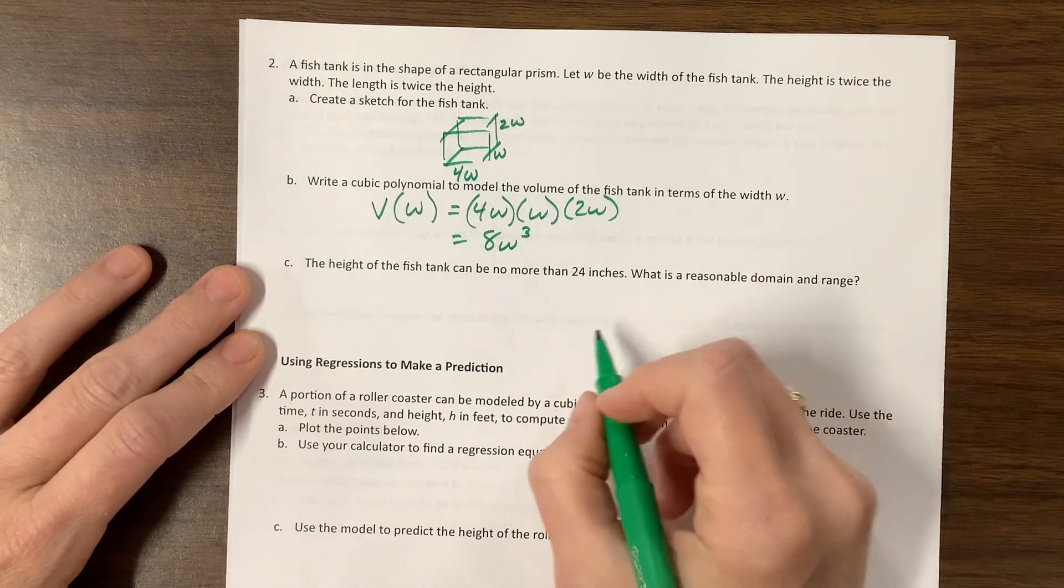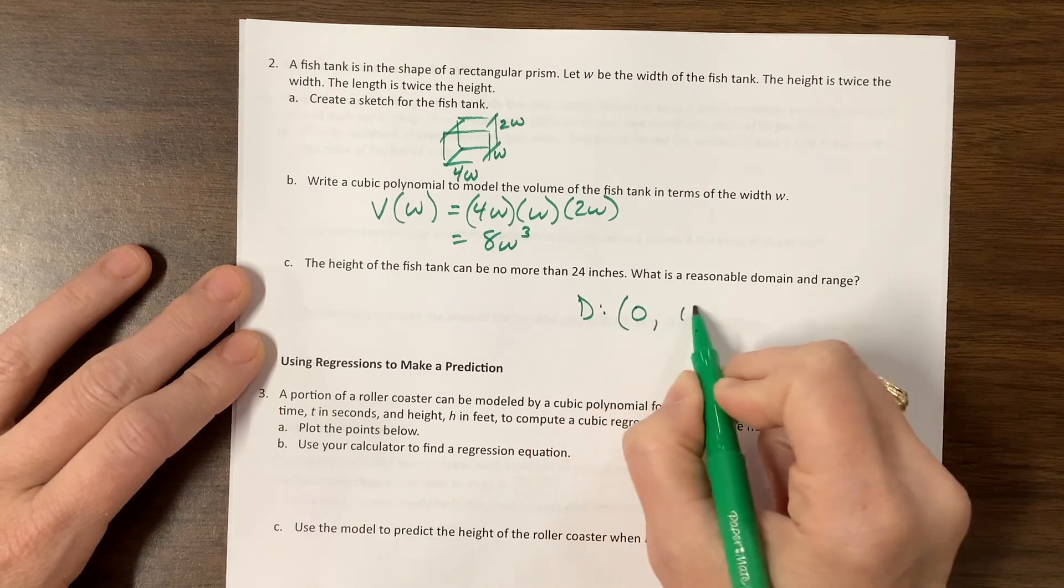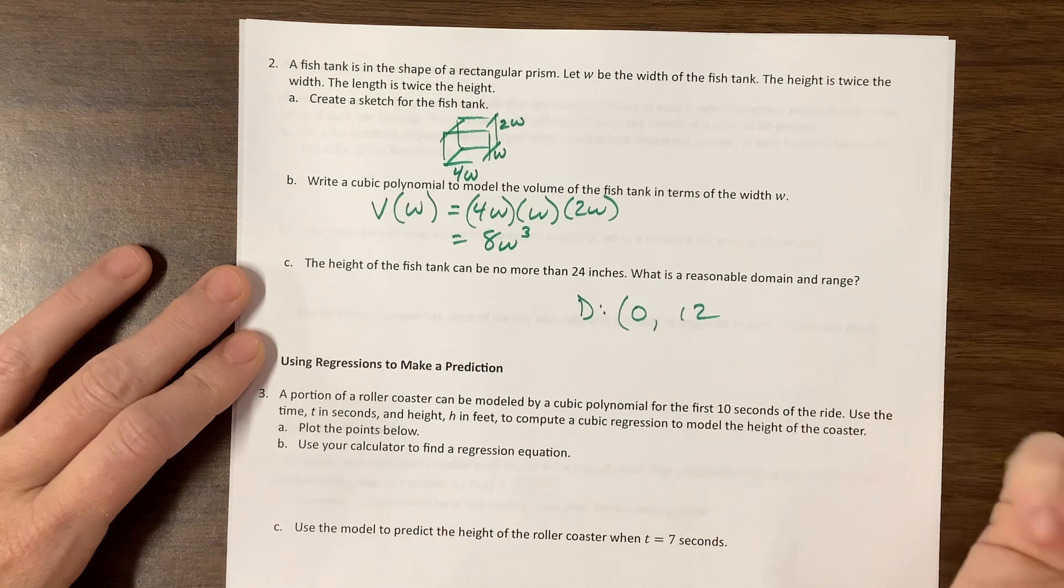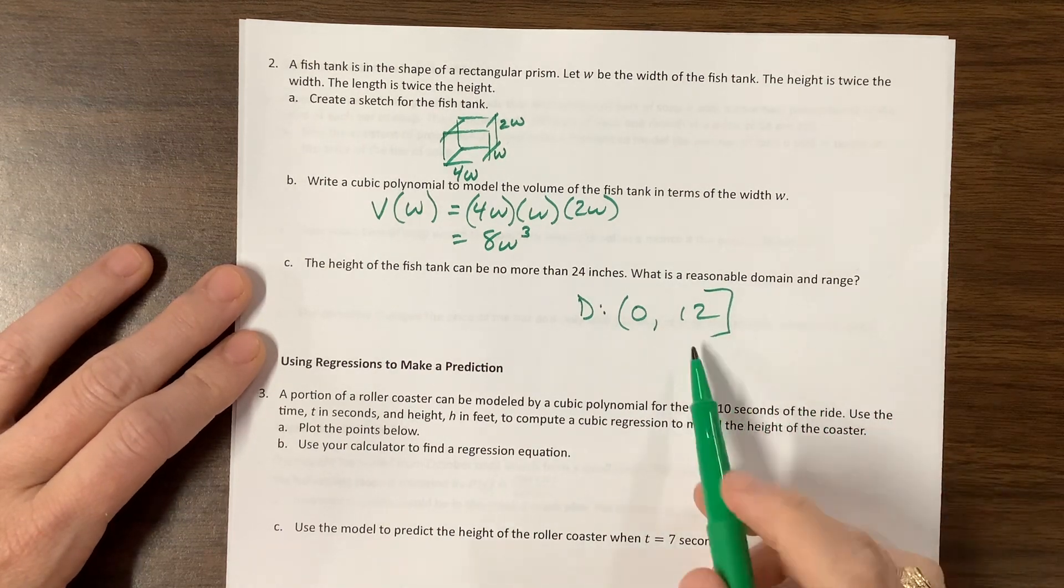So what's a reasonable domain? A domain could go somewhere from 0 to 12 for the W value. Maybe a little bit bigger if you wanted to see the whole thing.